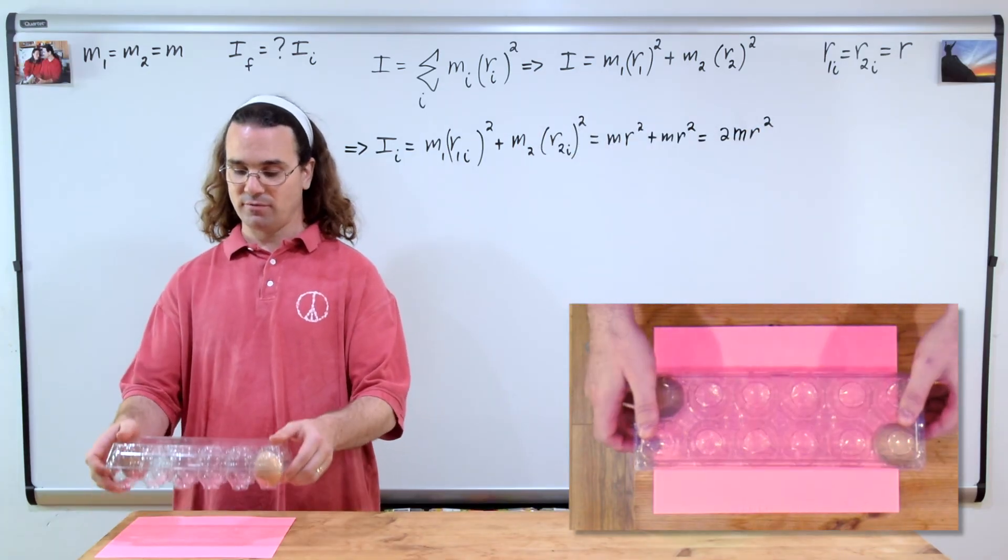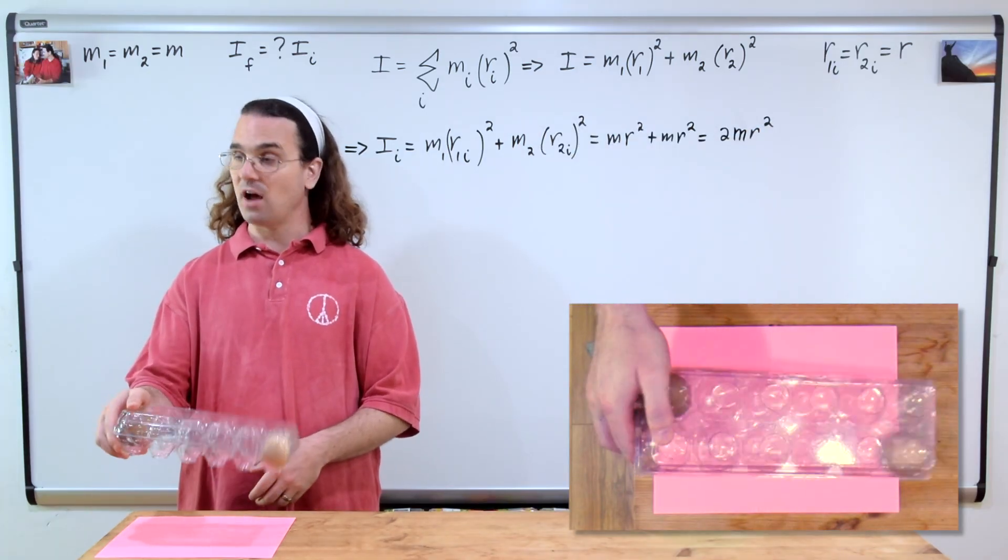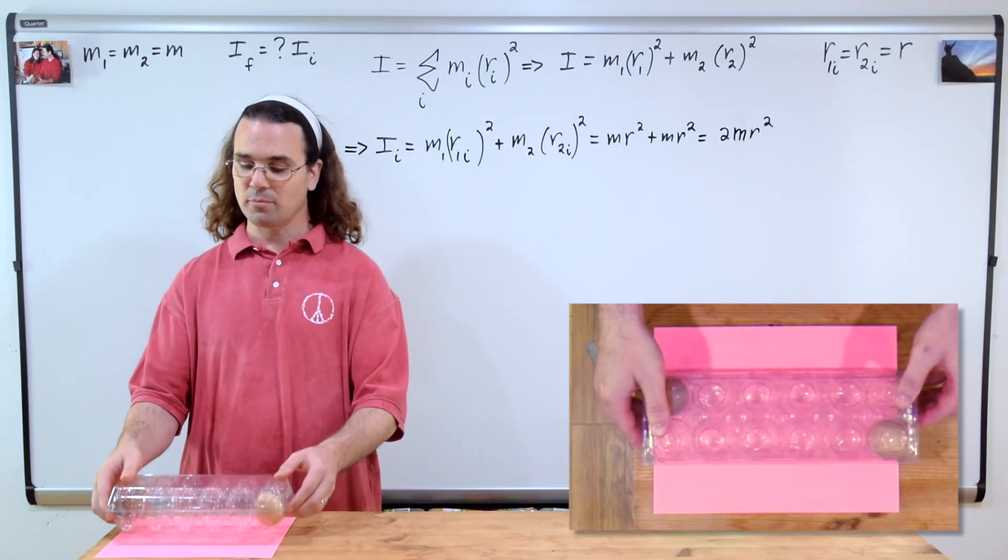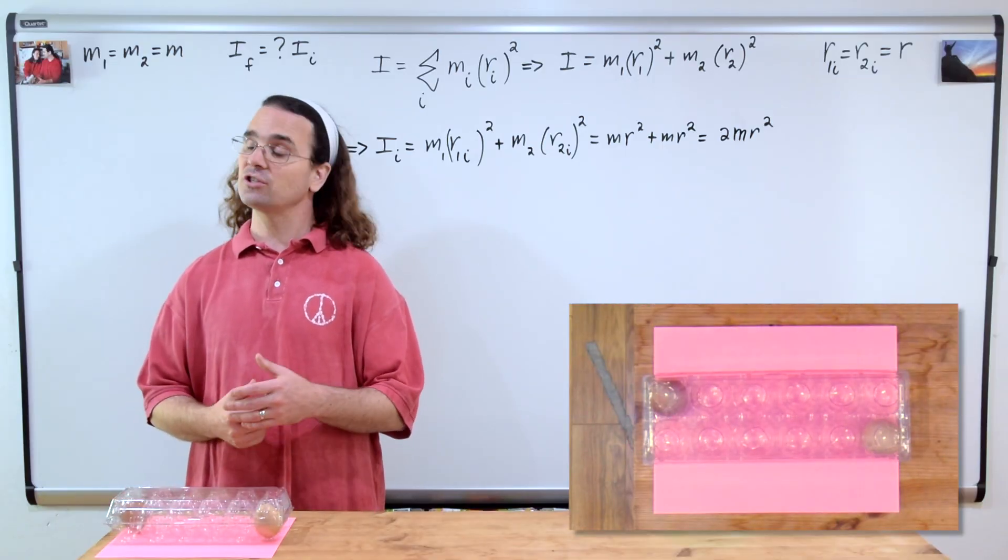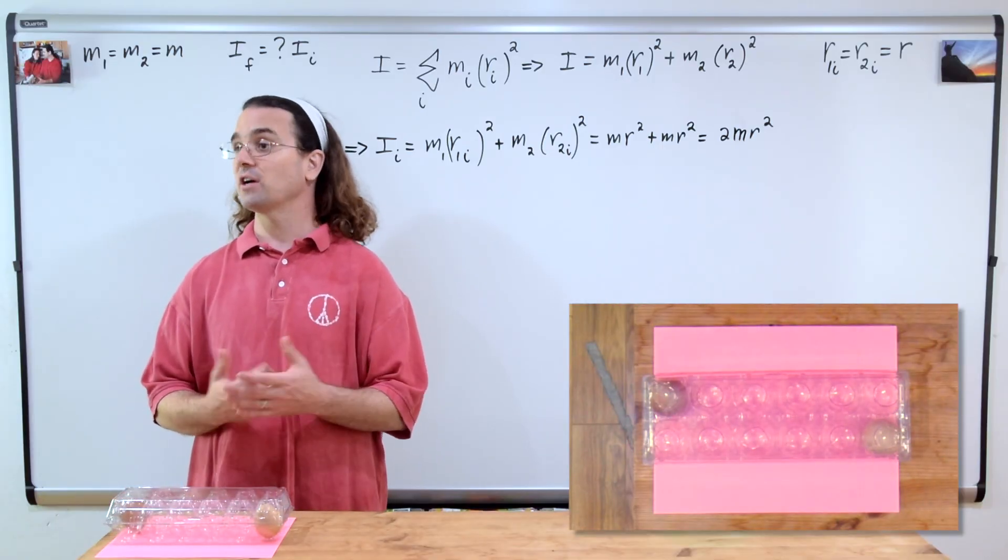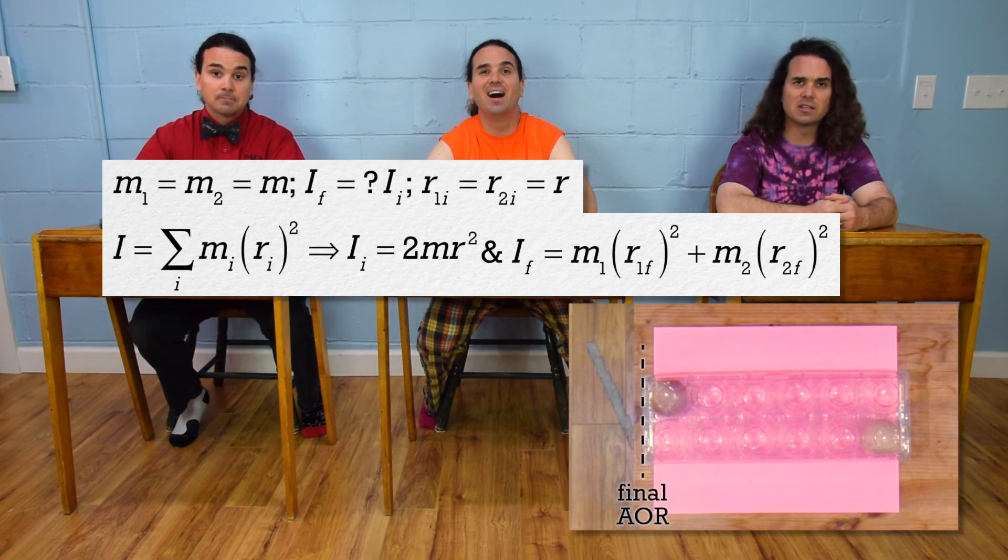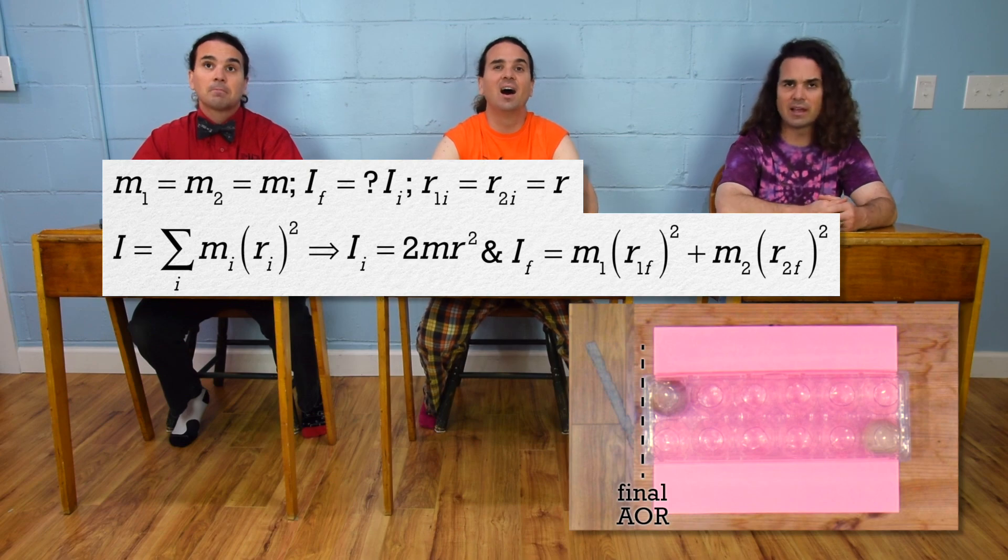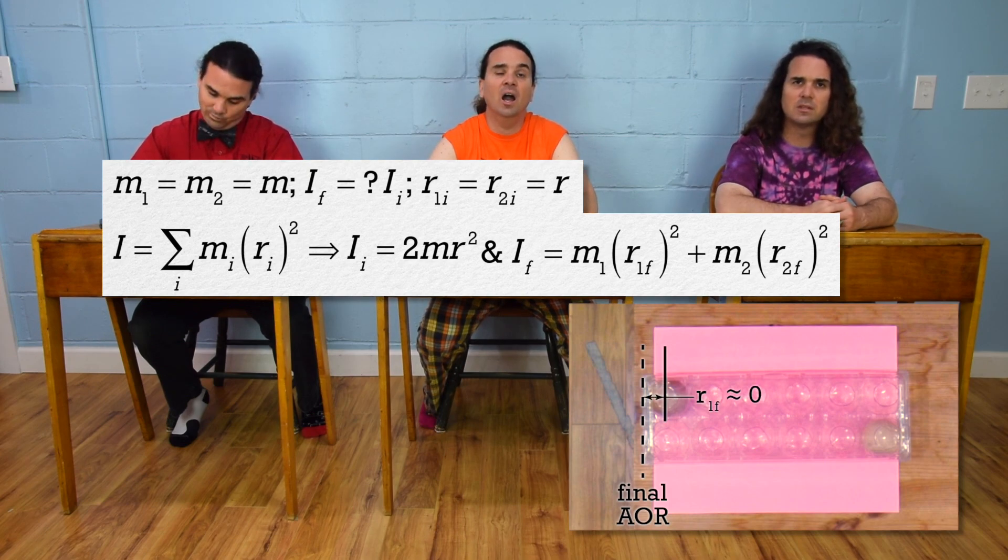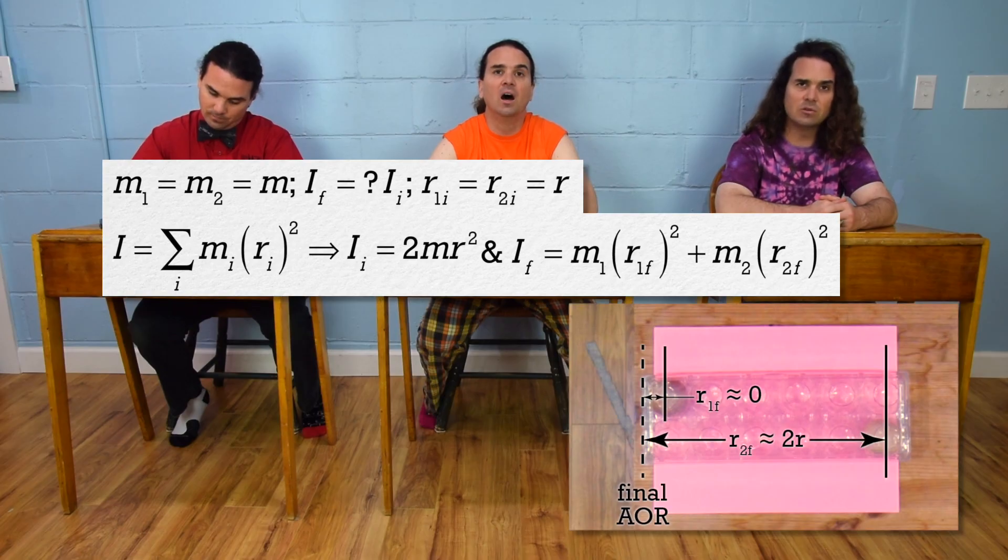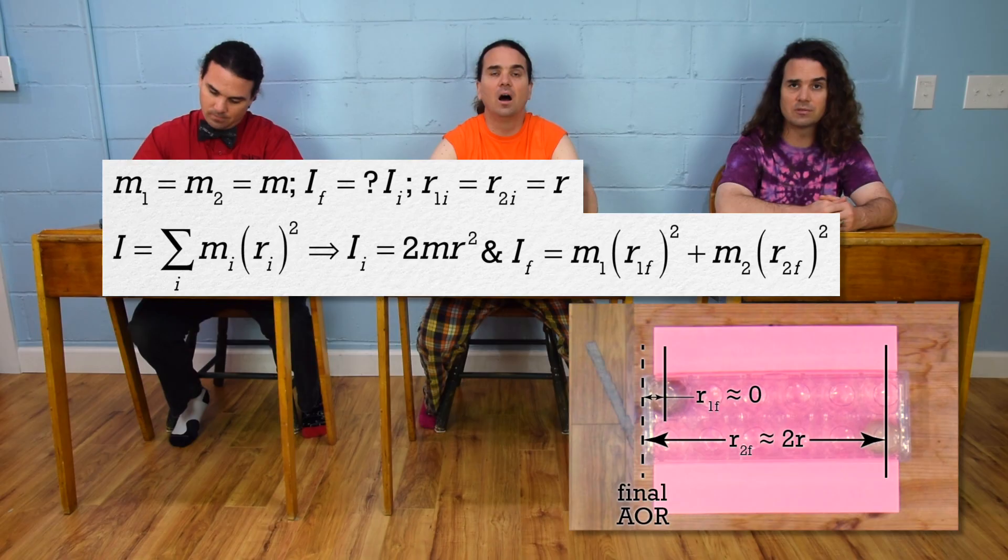Bo, now the axis of rotation is about one end of the egg carton. Please determine the final moment of inertia in terms of the initial moment of inertia. So now, one of the eggs is near the axis of rotation, so r₁ ≈ 0. The other egg is 2r from the axis of rotation, so r₂ = 2r.